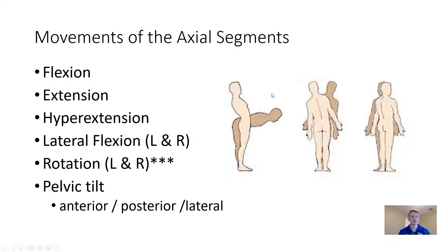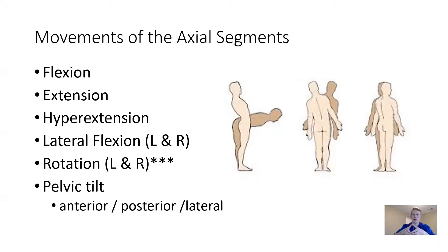With these pelvic tilts, we have anterior pelvic tilt — if you think about the pelvis as kind of like a bowl of soup, or an open circle, with our pubic symphysis in the front and our sacrum in the back. An anterior pelvic tilt, we tip that bowl anterior. Posterior pelvic tilt, we tip that bowl posterior.